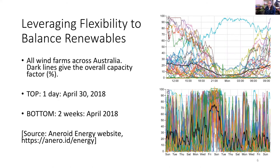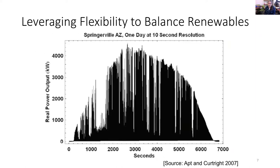The overall goal is to increase flexibility in these networks, using water networks to increase flexibility in the power network. Here's data from Australia showing wind power production over two weeks — illustrating the huge variability that makes it very hard for the power system to integrate such resources. Similarly, this figure shows solar power production in Arizona: there's a general trend over the day, but every time a cloud goes by there are huge dips in production, which is also hard to integrate.